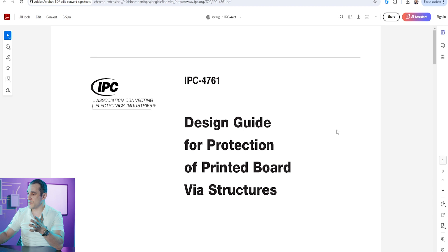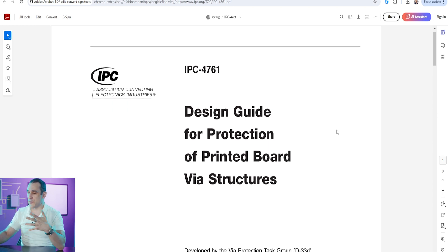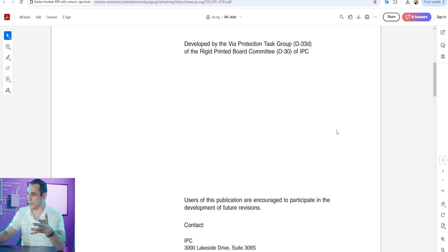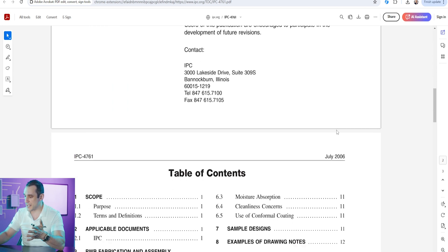First, before we get started talking about the different via types and what they all mean, what is IPC 4761? The IPC 4761 standard is a design guide for the protection of printed circuit board vias. So when we say via protection we're talking about things like filling, cap and fill, fill with solder mask, things like that.